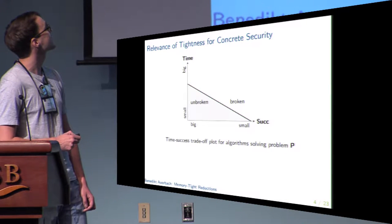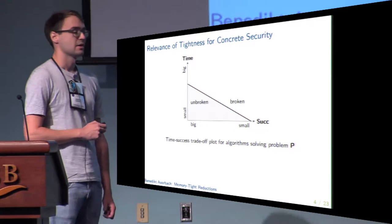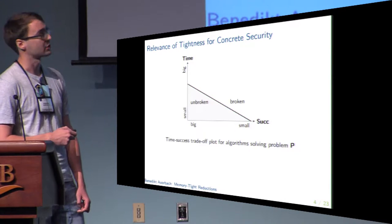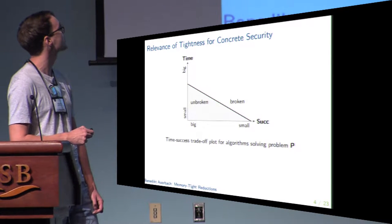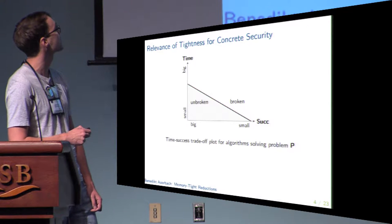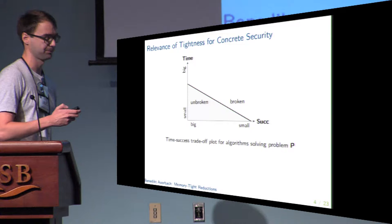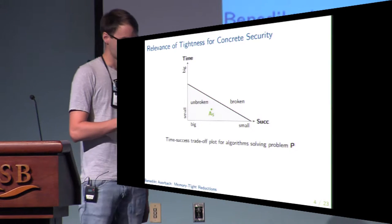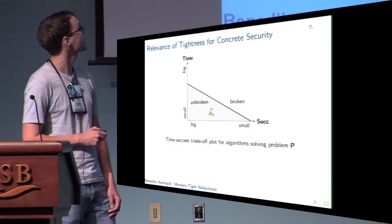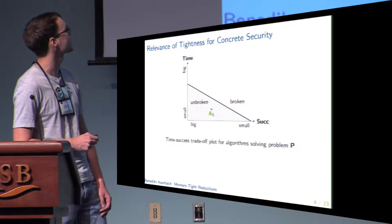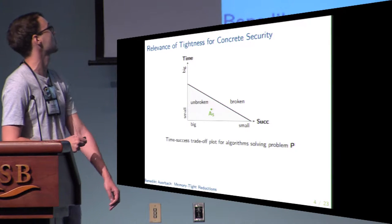If a point lies in the area labeled as unbroken, this means that according to current cryptanalytic knowledge there exists no algorithm able to solve an instance of our problem in the corresponding time with at least the corresponding success probability. Now suppose we want the scheme we constructed to be secure against all adversaries satisfying some constraints on running time and success probability.